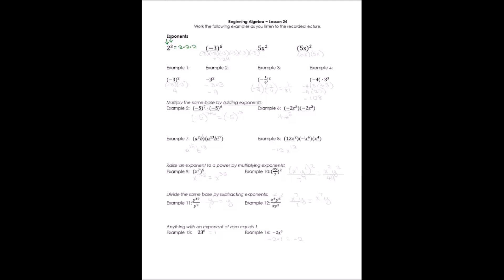In our second example, negative 3 to the power of 6 tells us to multiply everything in parentheses 6 times. That includes the negative, because the negative is in parentheses — so we'd write negative 3 times itself six times. Six negatives multiplied together is an even number, so we know we'll have a positive answer. 3 times 3 times 3 gives us 27, and I'd multiply that three times — ending up with 729.